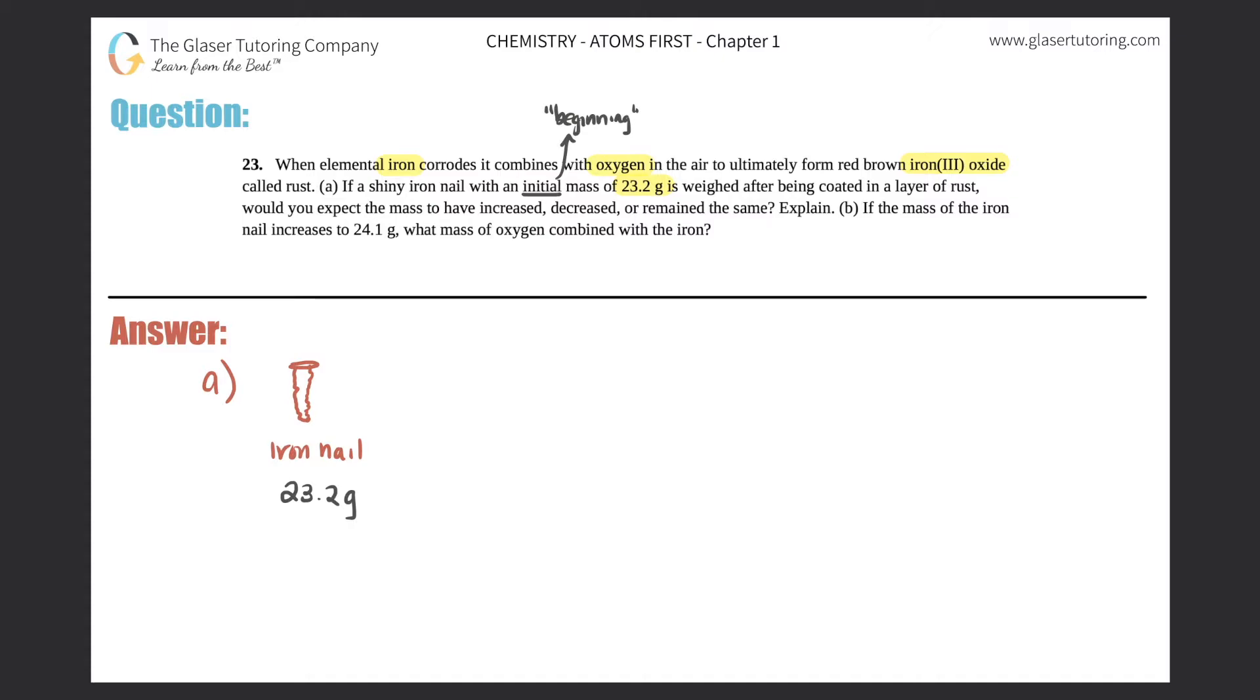Now they're telling you that when elemental iron corrodes, it combines with oxygen. Oxygen is always going to be O2, it's a molecule. So this iron nail plus oxygen will form iron-3 oxide. I'm just going to write the compound here.